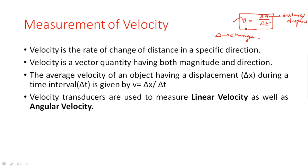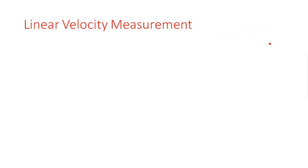Velocity transducers are used to measure either linear velocity or angular velocity. Linear velocity refers to movement in vertical or horizontal directions, while angular velocity is measured in angular terms, like degrees. There are several mechanisms included in linear velocity measurement.